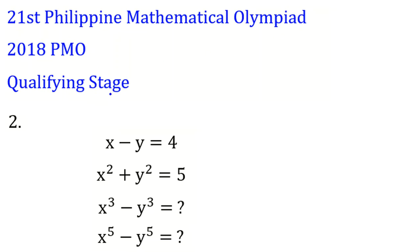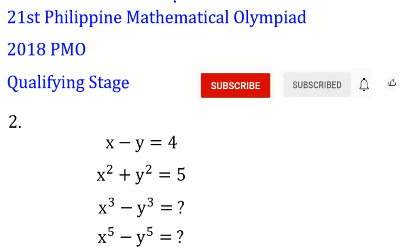This video has three parts: the first part is an introduction, the second part covers the basic identities you need for solving this problem. If you already know the basic identities, you can go straight to the solution. You can use chapters or time codes in the description. So let's solve this problem.